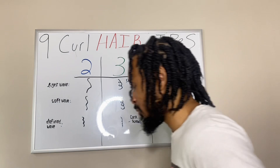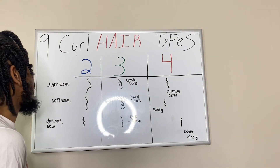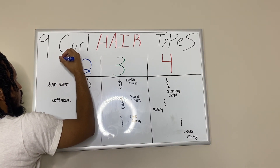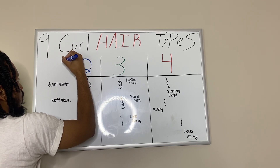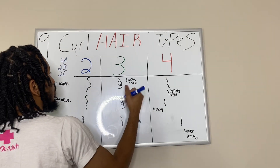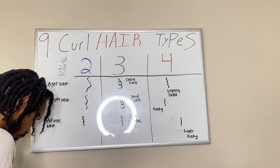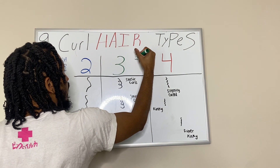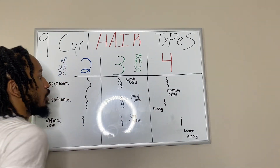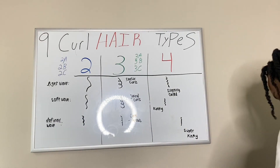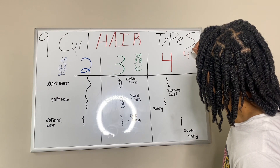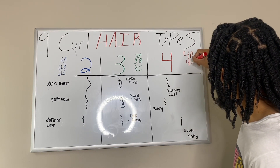What I'm going to do is go over here and write down the different types. We got type 2A, 2B, and 2C. We got 3A, 3B, and 3C. And we got 4A, 4B, and 4C.